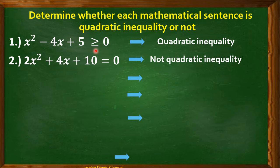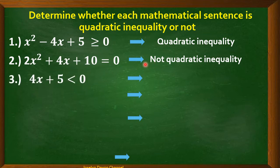Number 2: 2x² + 4x + 10 = 0. This is not quadratic inequality. Though the highest degree is 2, we do not have an inequality symbol here — this is an equal sign.